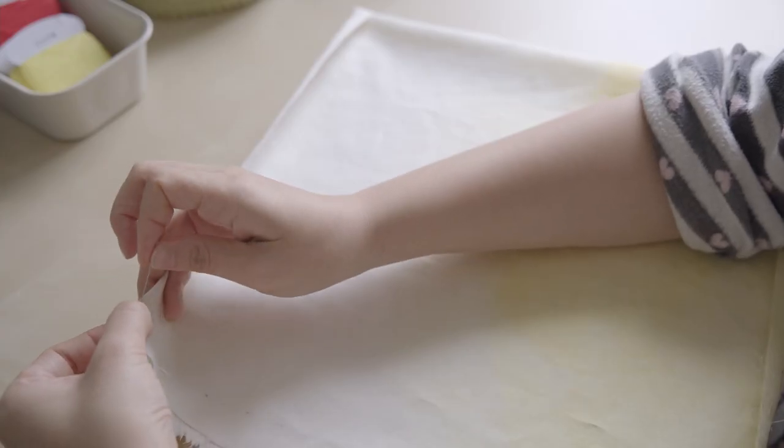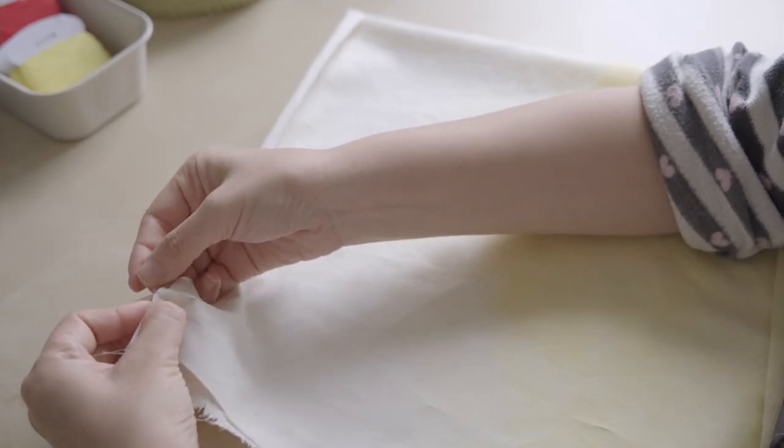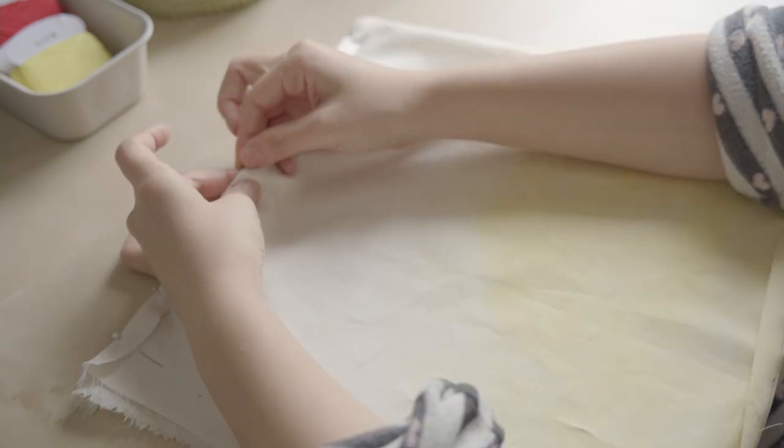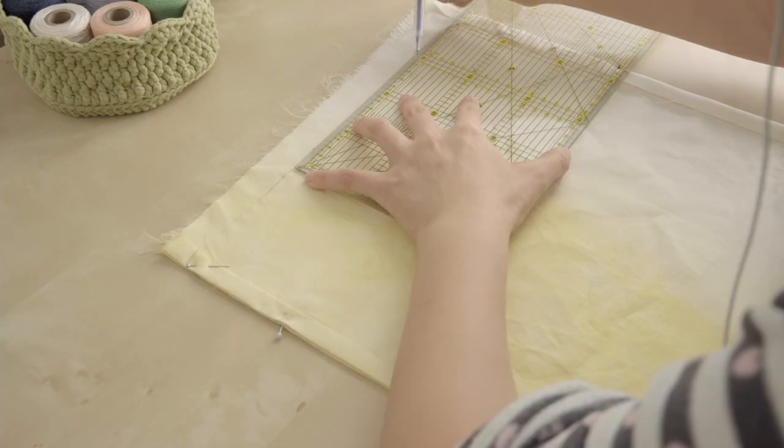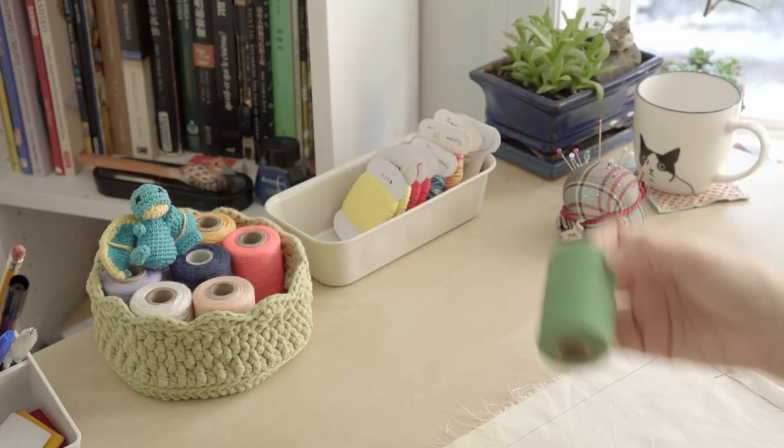Then, I'll fold the fabric into half from the wrong side. Measure 33 cm from the folding line and draw a line here. Let's sew the seam.